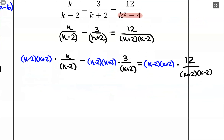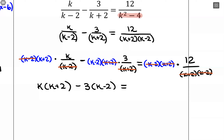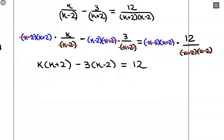Writing it out with multiplication: (k minus 2)(k plus 2) times k over (k minus 2), minus (k minus 2)(k plus 2) times 3 over (k plus 2), equals (k minus 2)(k plus 2) times 12 over (k plus 2)(k minus 2). Simplifying: in the first term (k minus 2) cancels, leaving k times (k plus 2). In the second term (k plus 2) cancels, leaving negative 3 times (k minus 2). On the right side everything cancels, leaving just 12. Distributing gives k squared plus 2k minus 3k plus 6 equals 12.